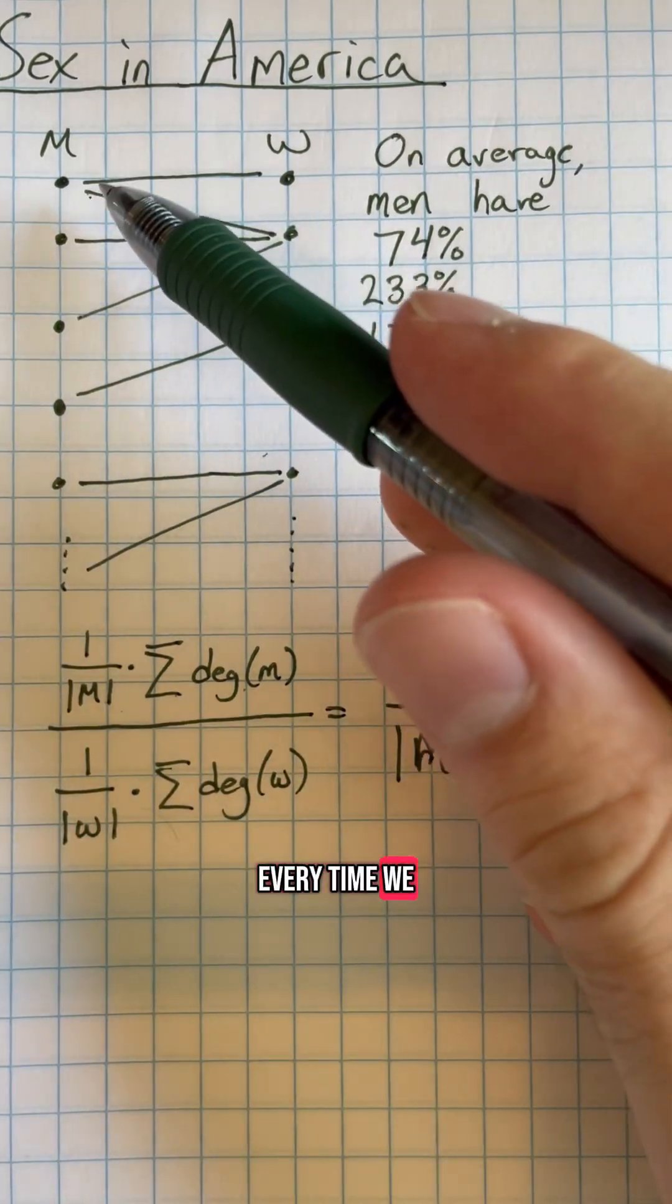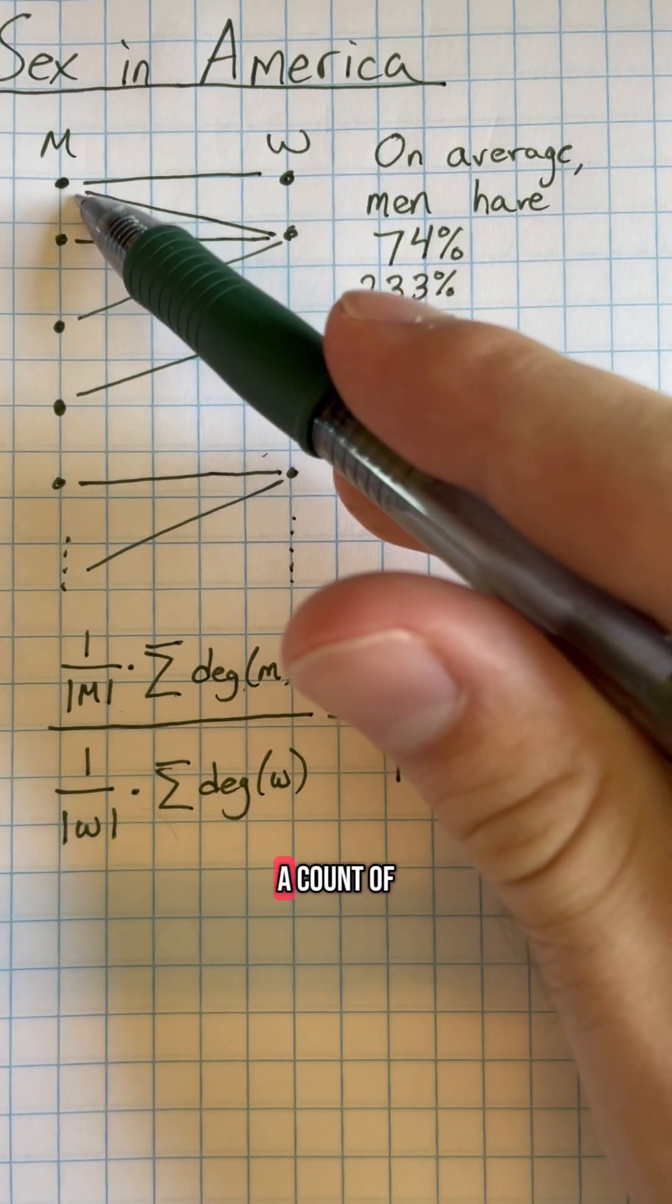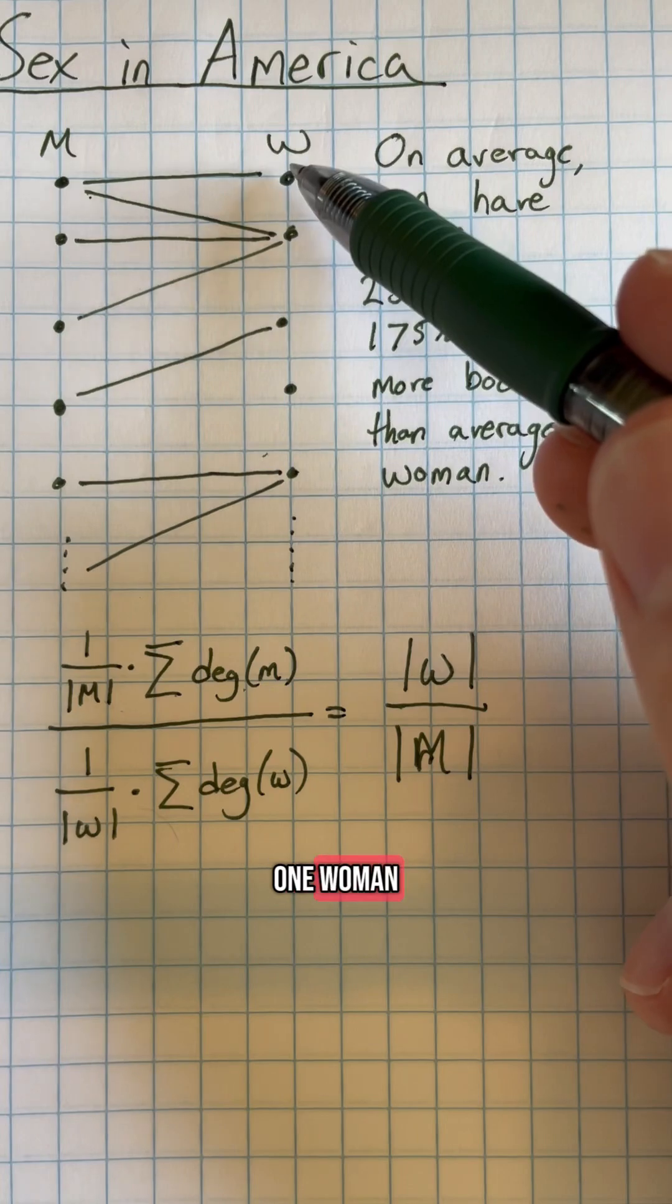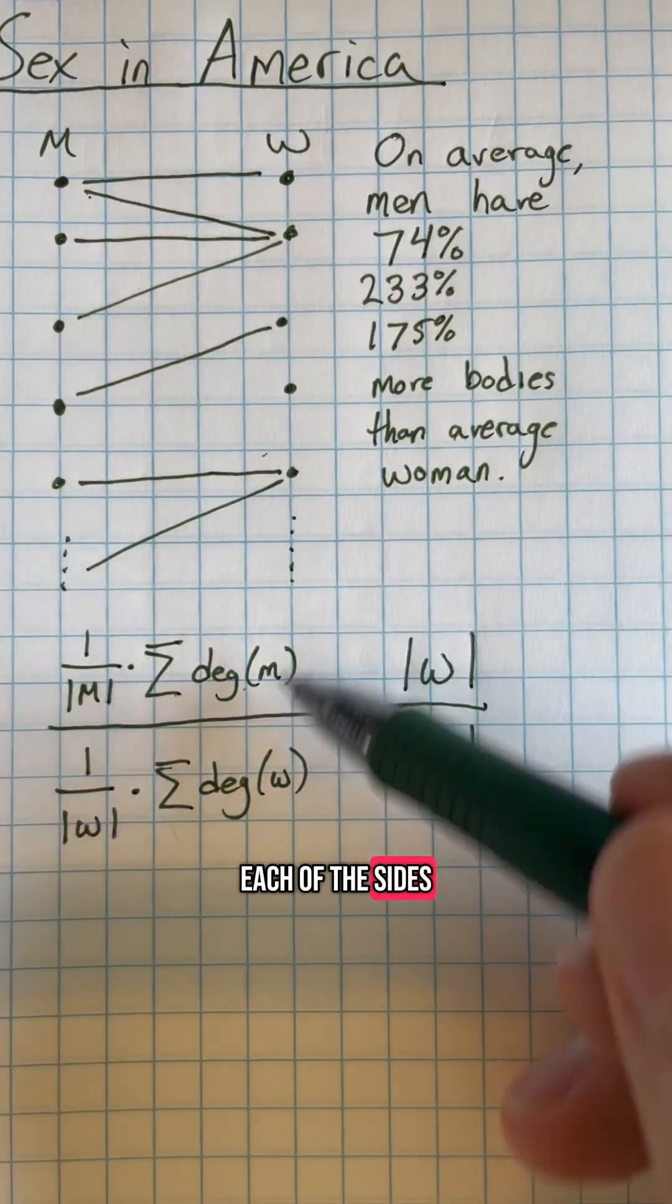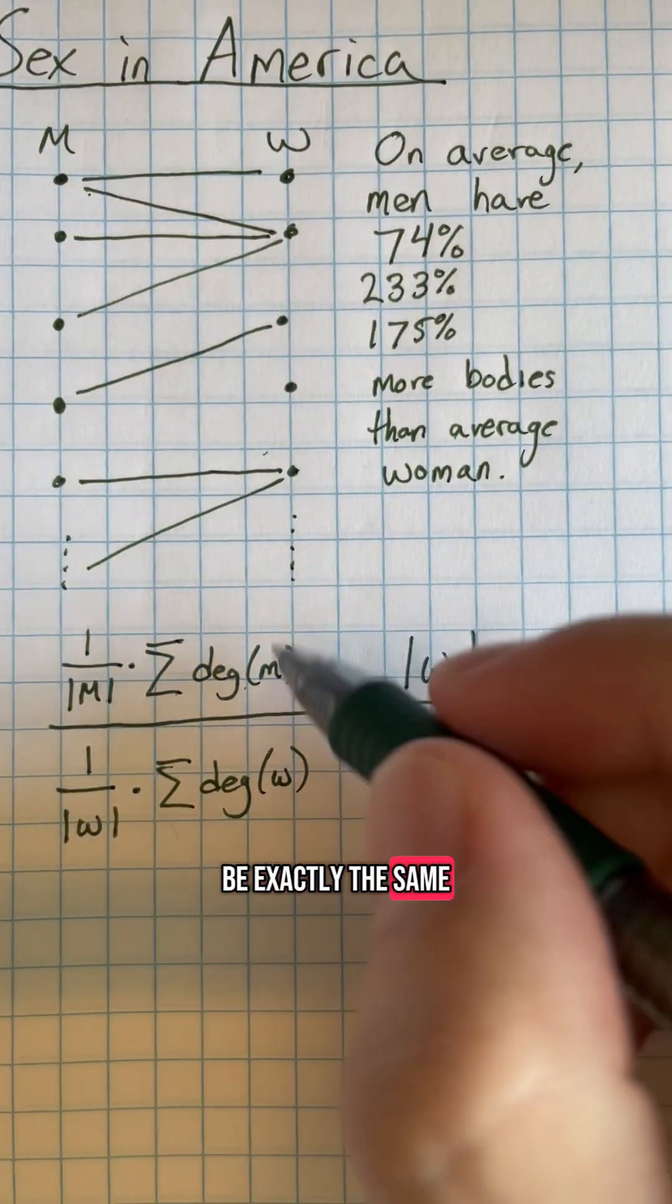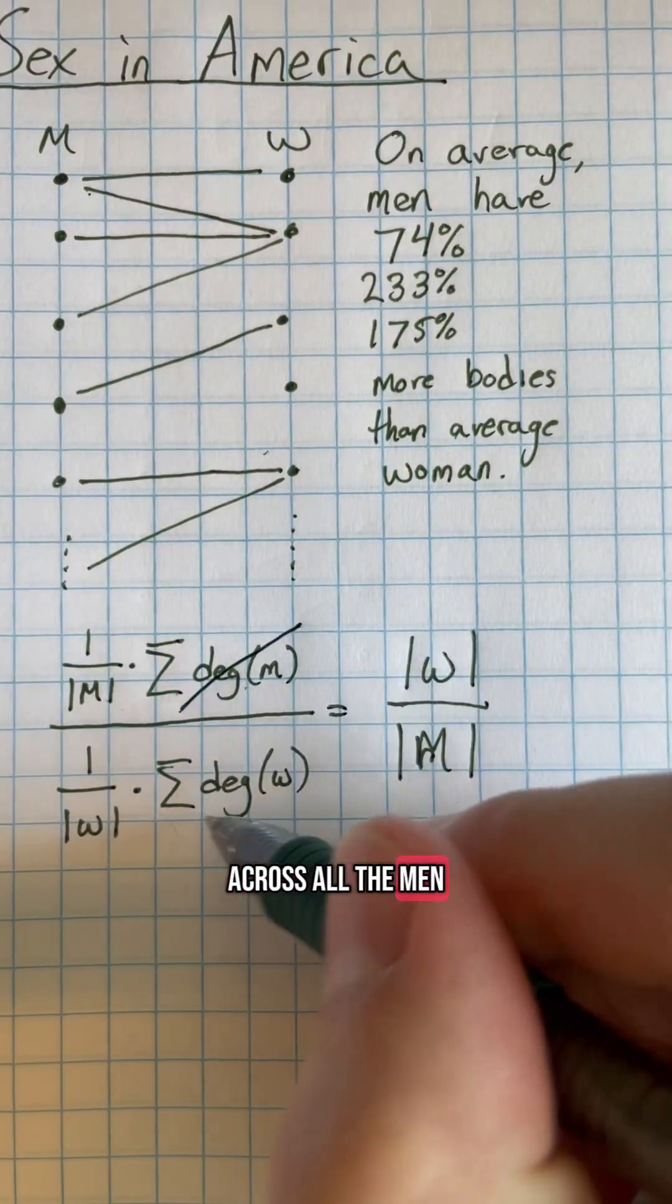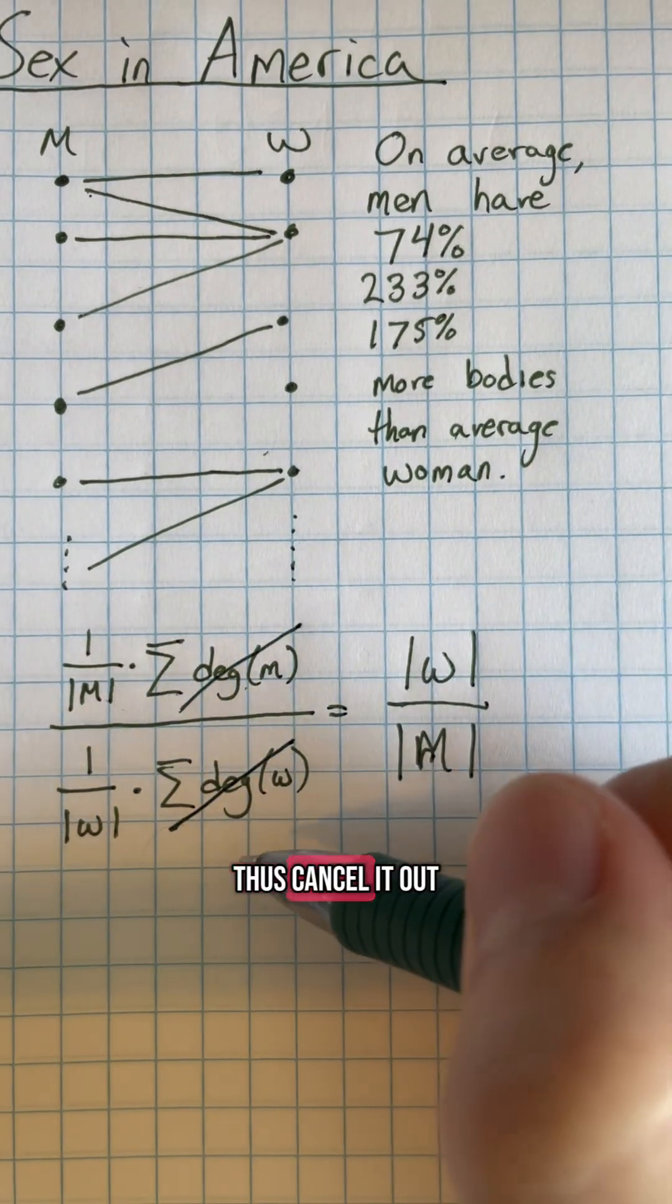But notice that every time we connect an edge, it adds one to the count of one man and one woman. So if we add up all these counts on each side, we find that the total number is exactly the same. Therefore, the sum of the degrees across all the men and the sum across all the women is the same number, and we can cancel it out.